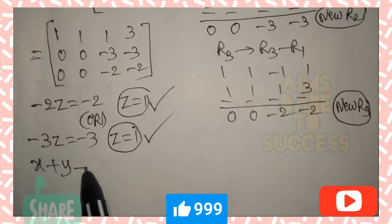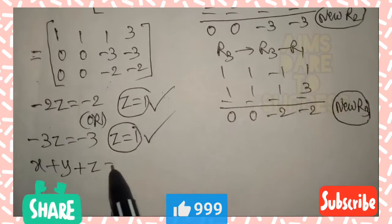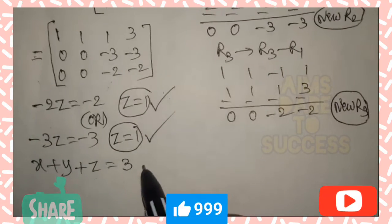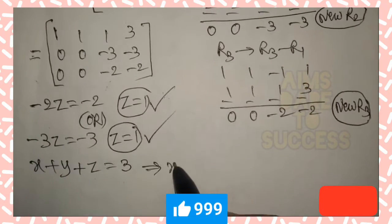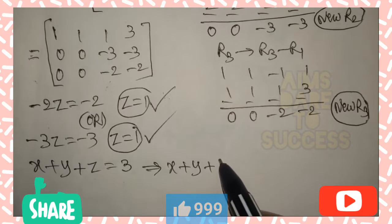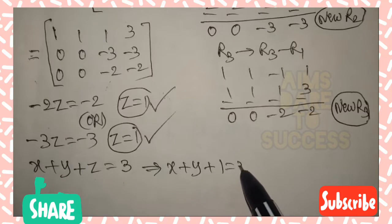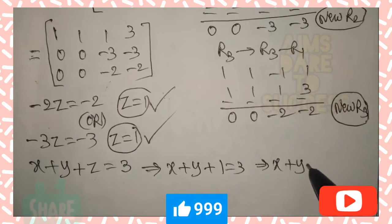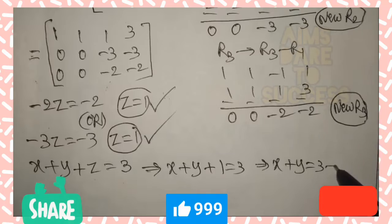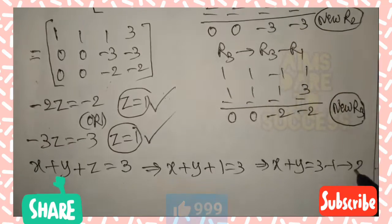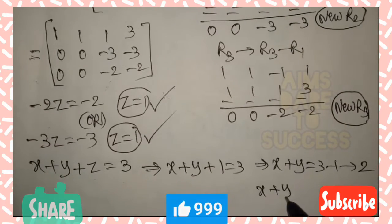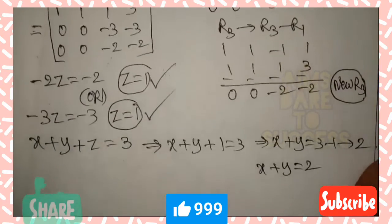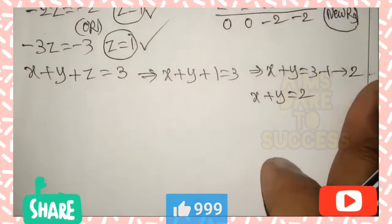From row 1: x + y + z = 3. Substituting z = 1 gives x + y + 1 = 3, so x + y = 3 - 1 = 2. We now have x + y = 2.